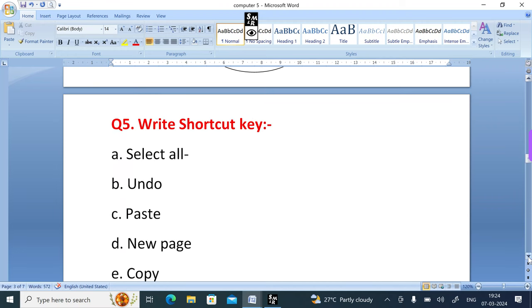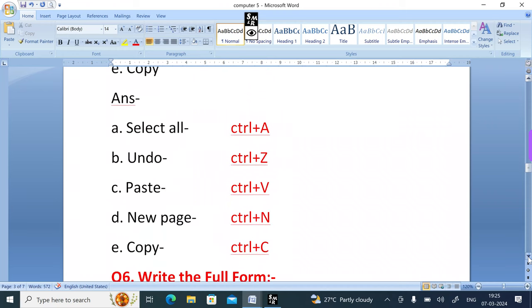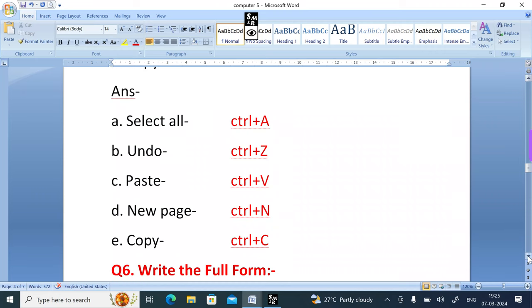Write shortcut keys: A select all, B undo, C paste, D new, E copy. Let's see the answers: select all is Control plus A, undo is Control plus Z, paste is Control plus V, new is Control plus N, and copy is Control plus C.